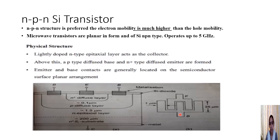This is a cross-sectional view and figure B shows a top view. The transistor structure has an emitter, base, and collector. We have an N-type silicon substrate, above which is an N epitaxial layer acting as the collector, above that a P-type diffused base, and above that a heavily doped N+ diffused layer acting as the emitter. The emitter and base contacts are generally located on the semiconductor surface in a planar arrangement.